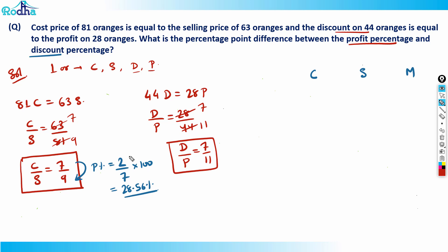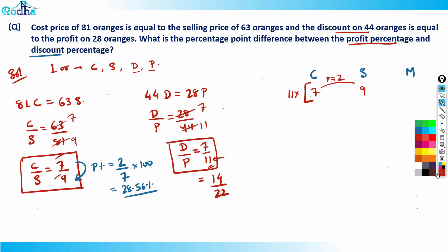Now I need to reconcile the ratios. When cost price is 7, selling price is 9, and profit is 2. I want profit to be 11 so that discount becomes 7. To make the numbers work, I write 7/11 as 14/22, so profit becomes an even number. Then I multiply the c/s ratio of 7/9 by 11: cost price becomes 77 and selling price becomes 99.